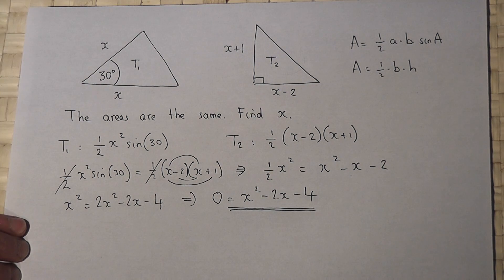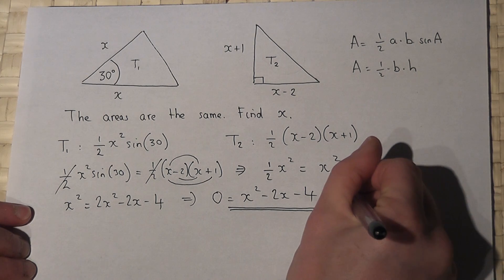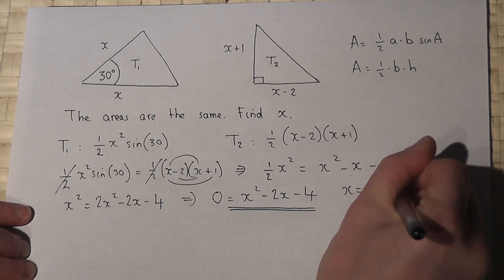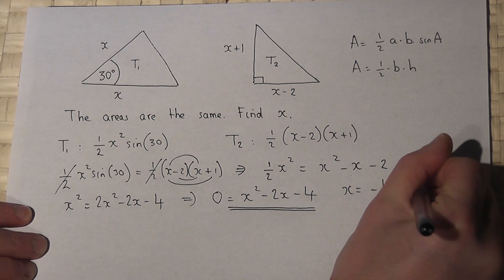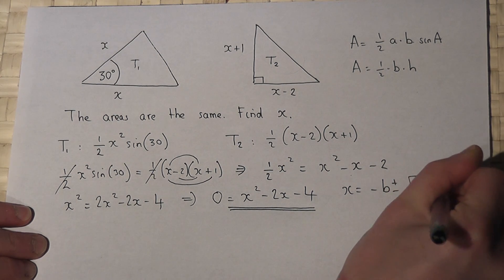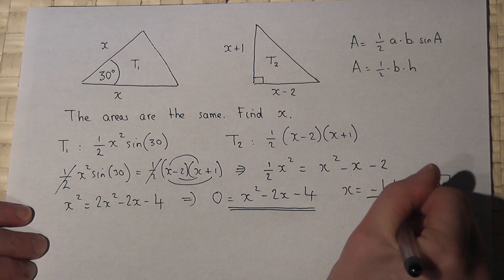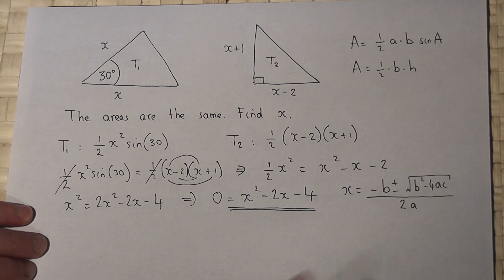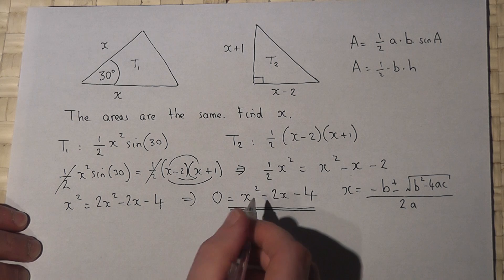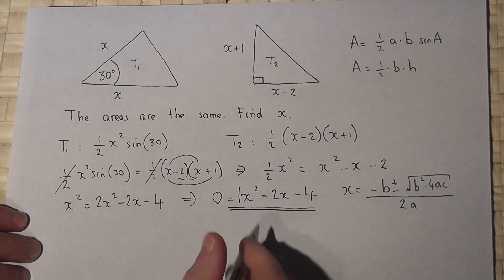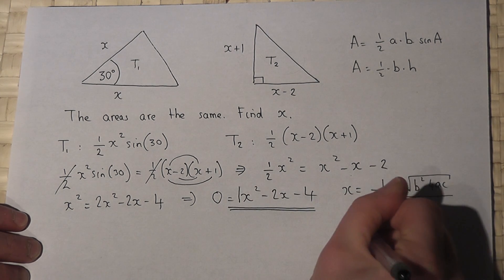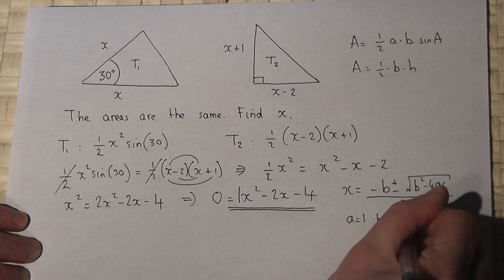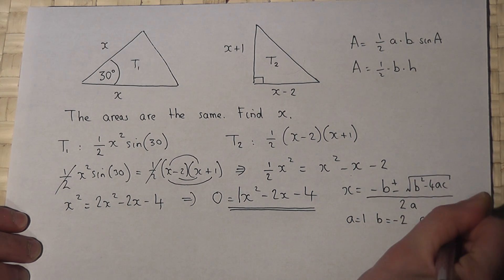Now to solve this, it doesn't factorize, so I'll use the quadratic formula which we know to be minus b plus or minus the square root of b squared minus 4ac, all over 2a. And for this equation, a is 1, b is minus 2, and c is minus 4.